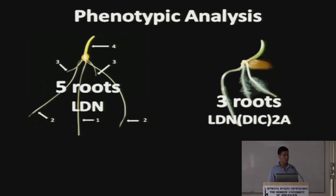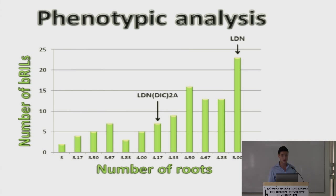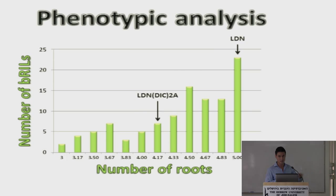The phenotypic analysis I performed was to classify plants as either having the five-root phenotype or the three-root phenotype from the substitution line. My results from the phenotypic analysis showed that the 2A substitution line developed an average of 4.17 roots, while Langdon had a constant phenotype of five roots.